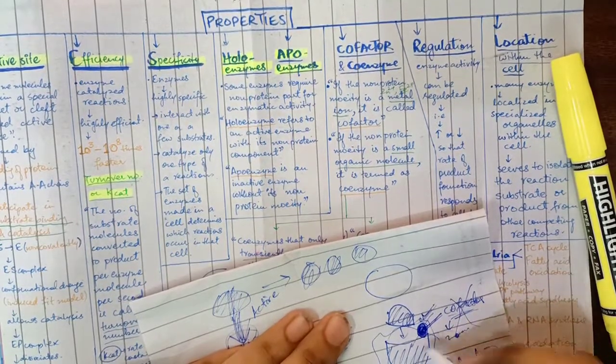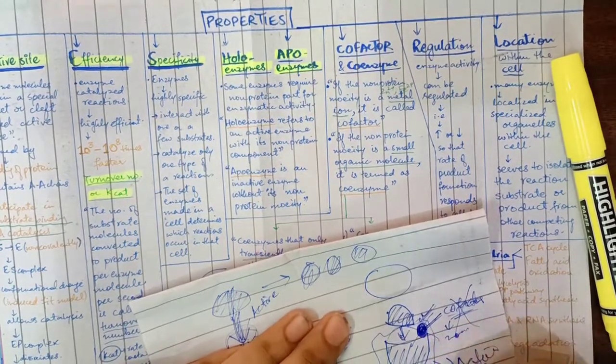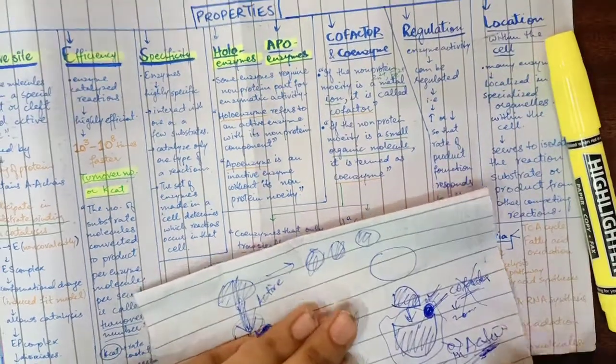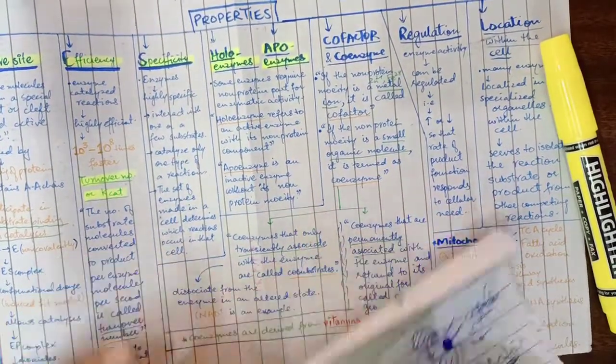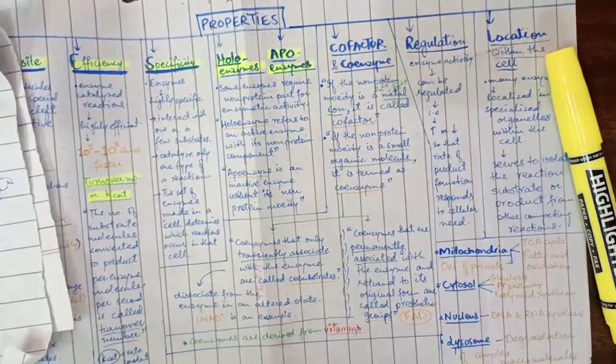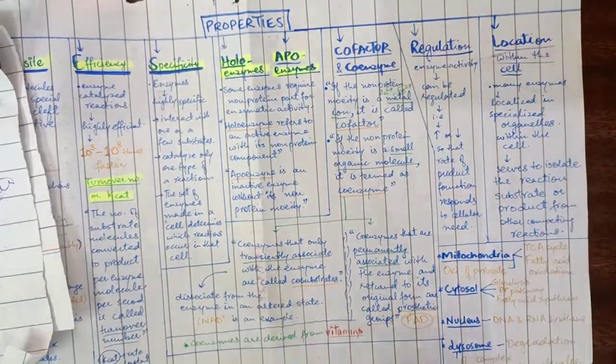If we have an active enzyme with its cofactor, we call it a holoenzyme. But without the cofactor, it cannot bind substrate and is inactive. We call this the apoenzyme, the enzyme without its non-protein moiety.